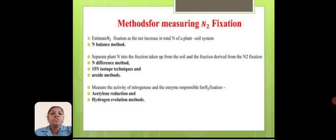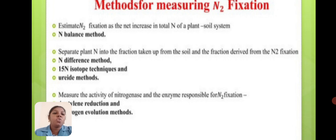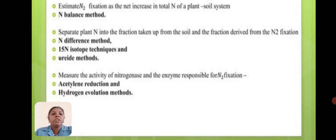Methods for measuring N2 fixation include: estimating nitrogen fixation as a net increase in total nitrogen of a plant-soil system using the nitrogen balance method; separating plant nitrogen into fractions taken up from the soil and fractions derived from nitrogen fixation using the nitrogen difference method; the 15N isotope technique and ureide method; and measuring the activity of nitrogenase enzyme responsible for nitrogen fixation using the acetylene reduction and hydrogen evolution method.